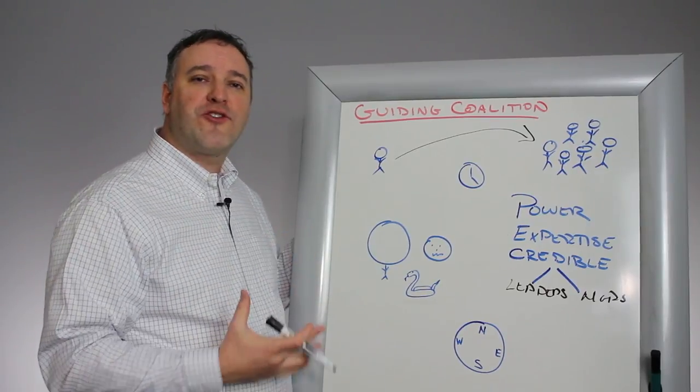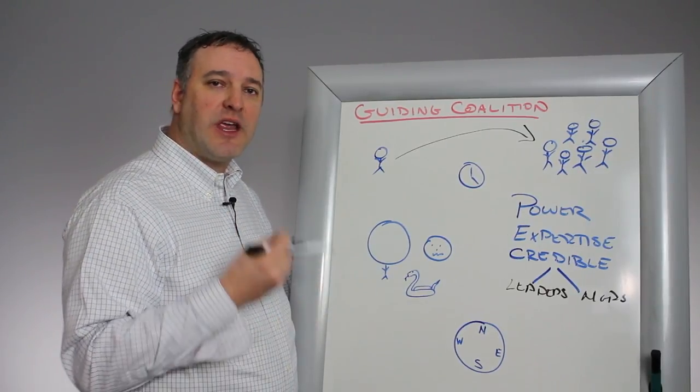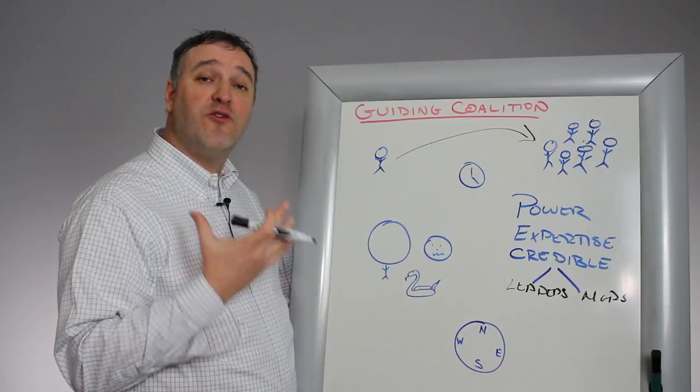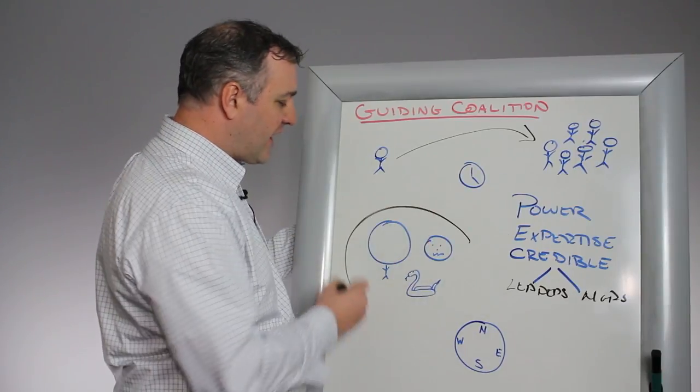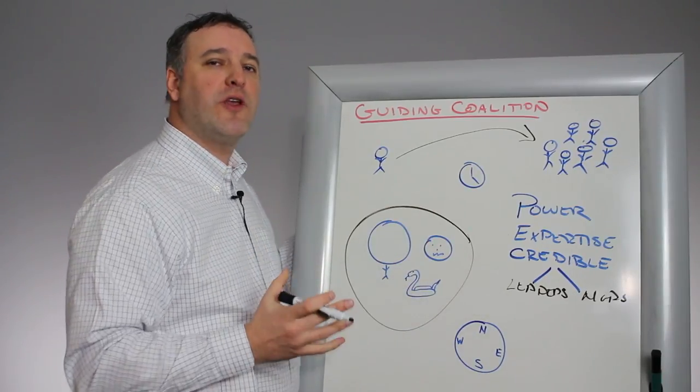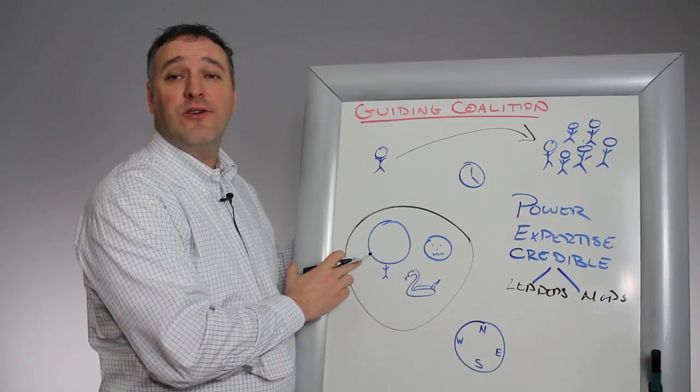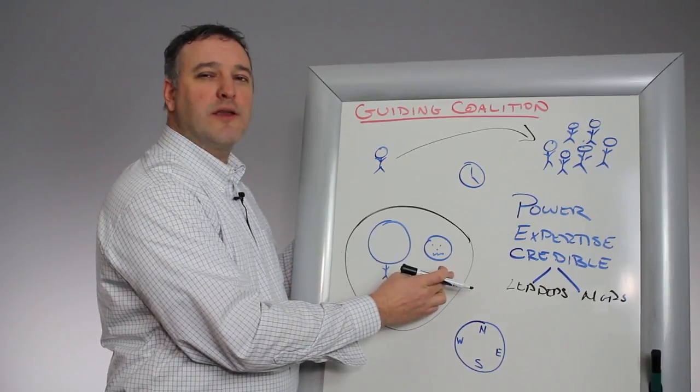You also have to create a sense of trust in that group. And you've got to have the right people, so you have to avoid some characteristics. The characteristics that he calls out as the most poisonous are people who have big egos, people who are reluctant players,